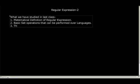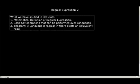Let me write down point number three: the theorem states that a language is regular if and only if there exists an equivalent regular expression for it. Since it is an if-and-only-if condition, we need to prove it in both directions. We have proved only one way so far — given a regular expression, we can create an epsilon-NFA, meaning for every regular expression there exists an equivalent regular language.